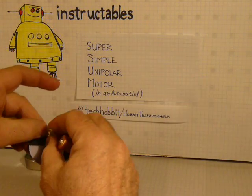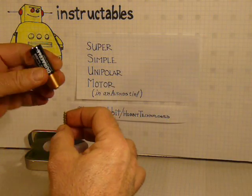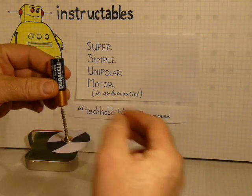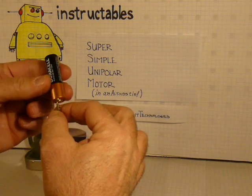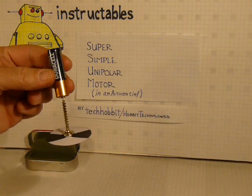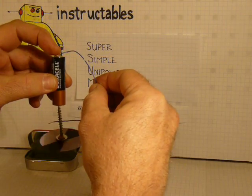And then the magnetism coming through the screw will adhere to the battery. I use the positive side of the battery because the little button tends to be a nice little bearing for that to ride on. And the next step is to apply power.